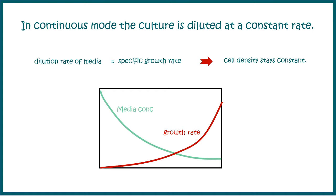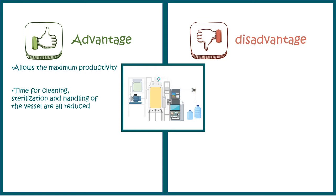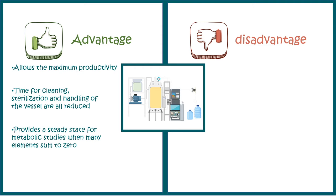That constant cell density is the biggest advantage of continuous process, and modern industry is increasingly adapting continuous processes over fed batch or batch processes. It allows maximum productivity because reactor downtime is low — you don't have to shut down the reactor after every run, so time for cleaning and sterilization is minimized. Lastly, it provides a steady state ideal for metabolic studies, making it very useful for purifying metabolites.